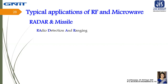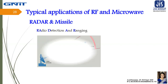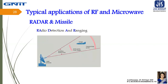A radar system consists of a transmitter producing electromagnetic waves in the radio or microwave domain, a transmitting antenna, and a receiving antenna — often the same antenna is used for both transmitting and receiving — along with a receiver and processor to determine properties of the object. Radio waves from the transmitter reflect off the object and return to the receiver, giving information about the object's location and speed.